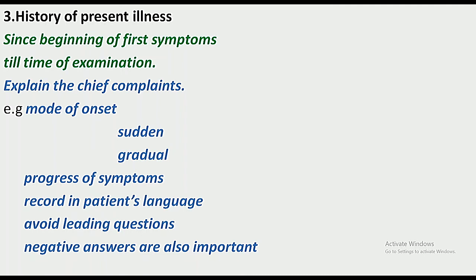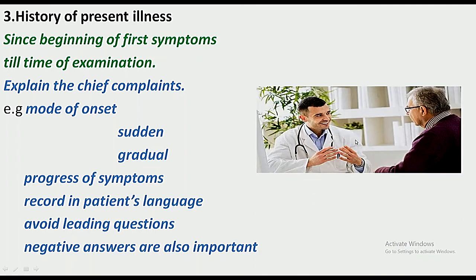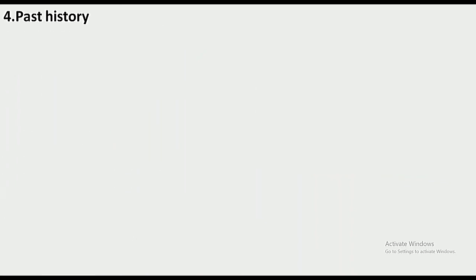In history of present illness, note the mode of onset — whether pain was sudden or gradual — and progression of symptoms. Record in the patient's own language, as that makes it easier to explain. Avoid leading questions, because patients will tend to answer accordingly. Negative answers are also very important — if a patient says 'no' to a symptom, that is a significant negative answer.